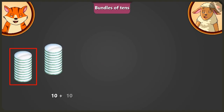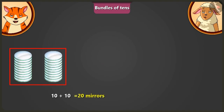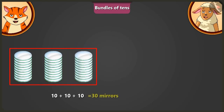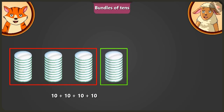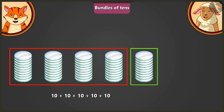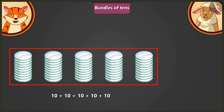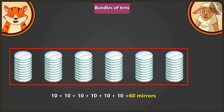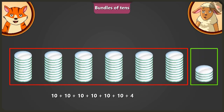Adding a 10 and a second 10, we get 20. Adding another 10 to 20, we get 30. Adding another 10 to 30, we get 40. Now, adding another 10 to 40, makes it 50. Adding the remaining 10 to 50, makes it 60. Now, adding 4 mirrors to 60 will make it 64 mirrors.